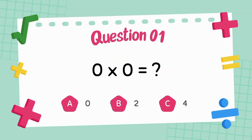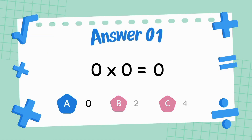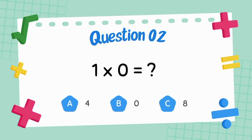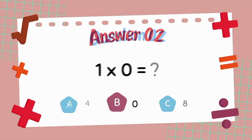What is zero multiply zero? The answer is zero. What is one multiply zero? The answer is zero.